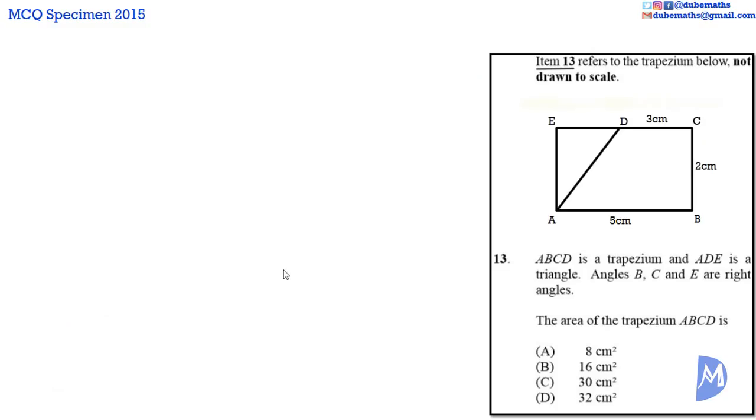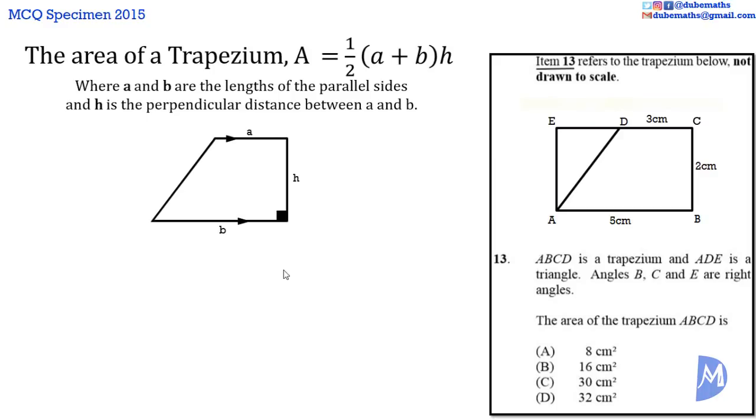The area of a trapezium A is equal to a half multiplied by A plus B multiplied by H, where A and B are the lengths of the parallel sides and H is the perpendicular distance between A and B. Thus, the area of ABCD is equal to a half multiplied by 5 plus 3 multiplied by 2, which is equal to a half multiplied by 8 multiplied by 2. A half multiplied by 8 is equal to 4. 4 multiplied by 2 is equal to 8. The answer is A.